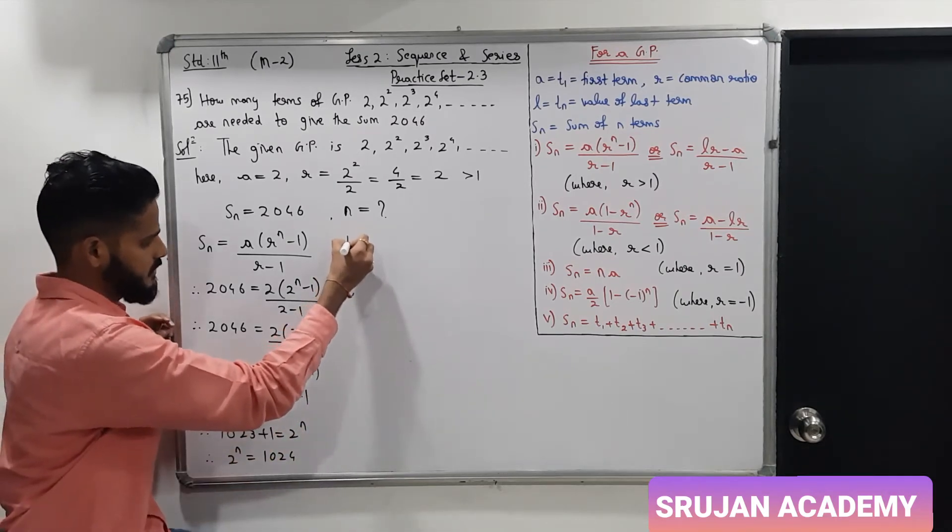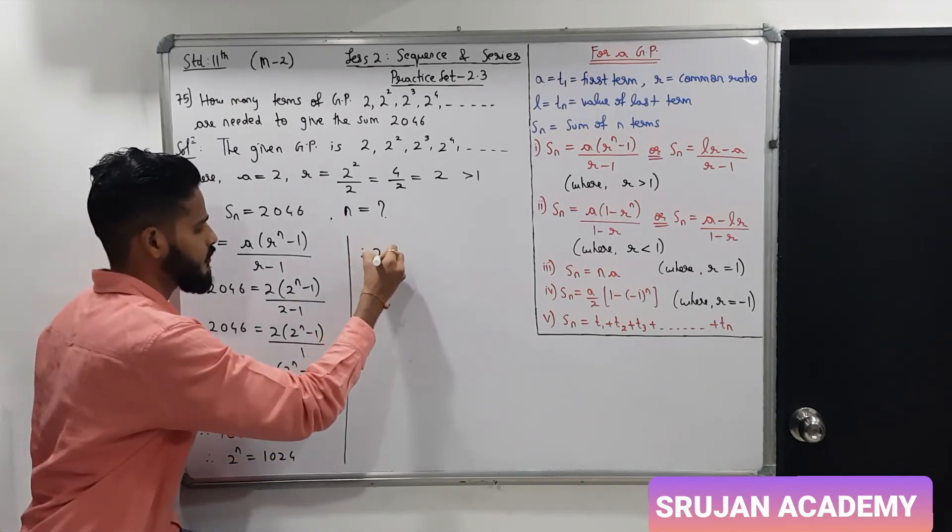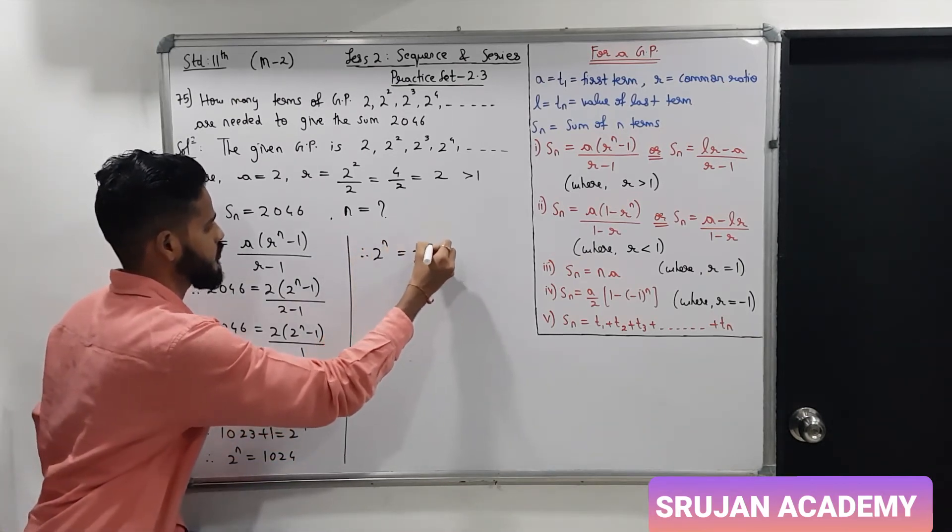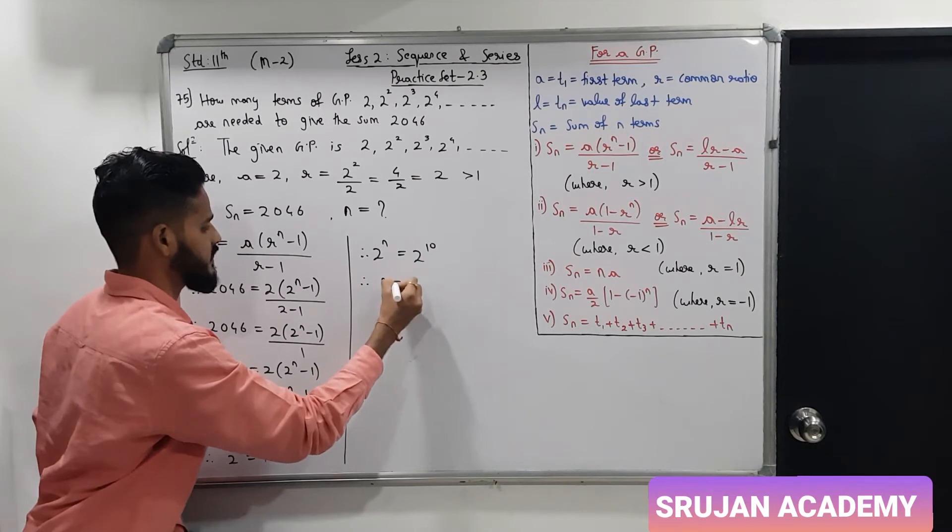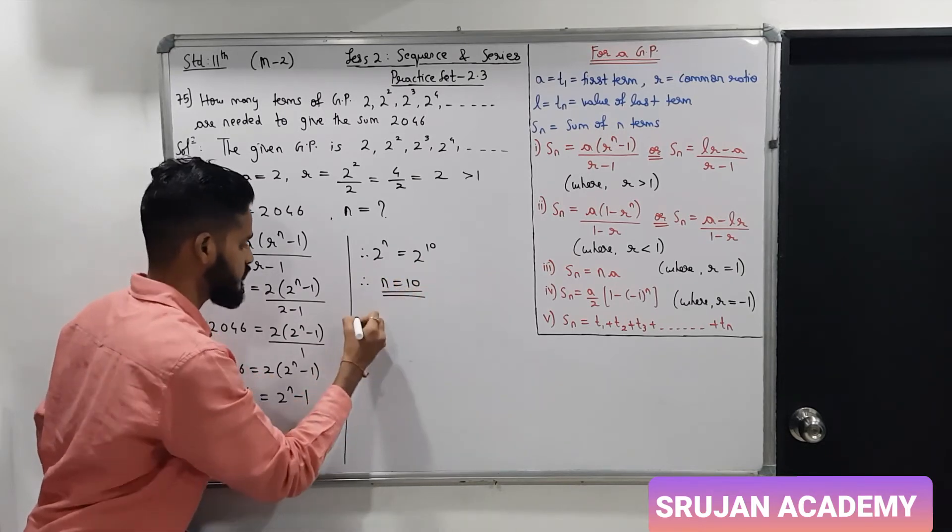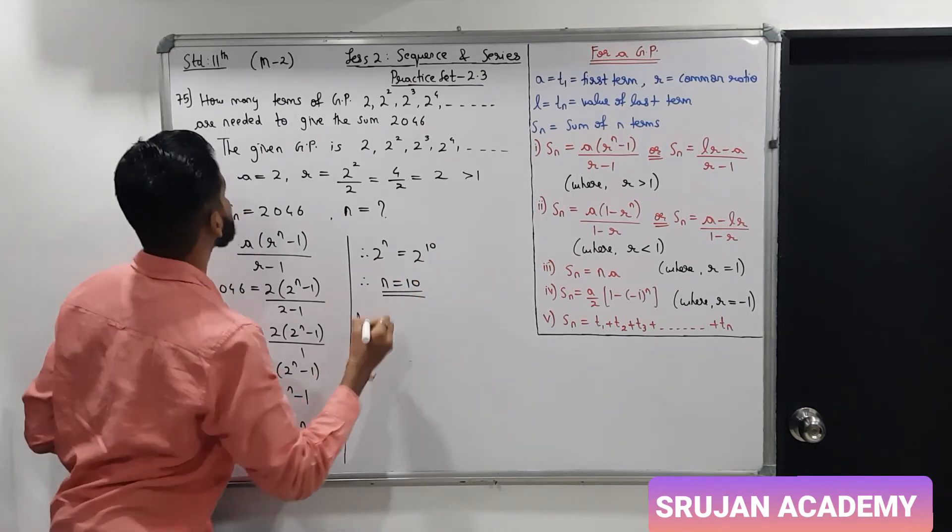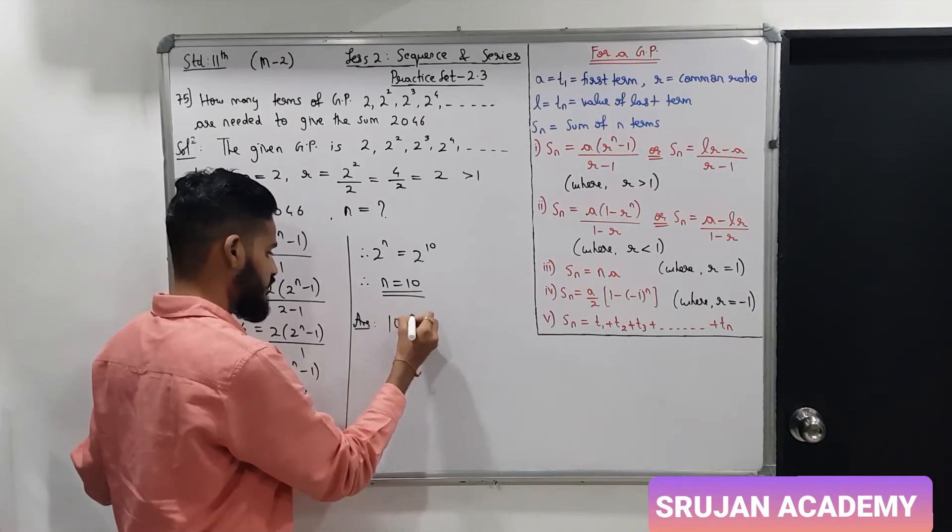And 2 multiplication right side divides left. 1023 equals 2 raise to n minus 1. Minus 1 right side to left becomes plus 1. So 2 raise to n is 1024. And 2 raise to 10 is 1024.